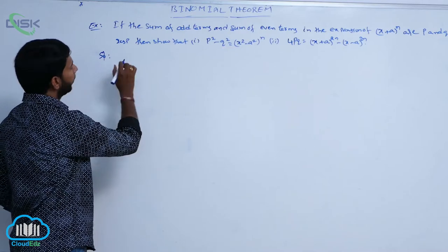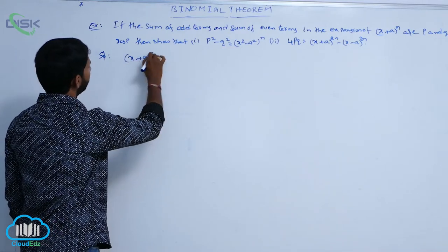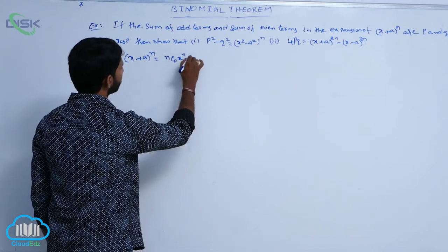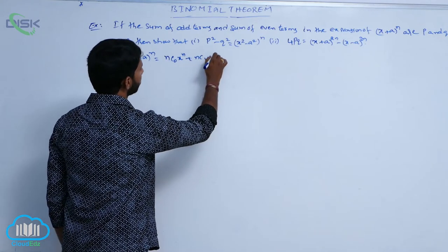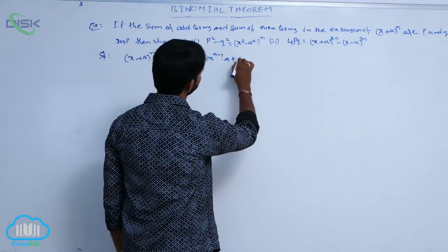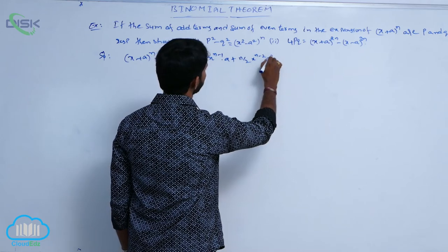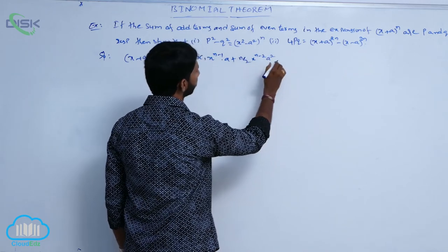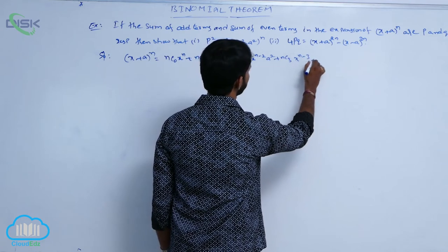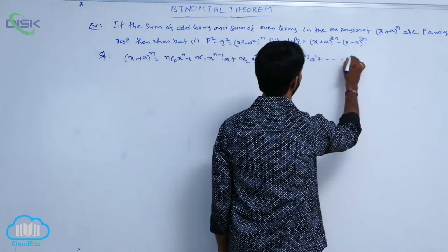First, write the expansion of (x + a) whole power n. That is, (x + a)ⁿ = nC0 · xⁿ + nC1 · x^(n-1) · a + nC2 · x^(n-2) · a² + nC3 · x^(n-3) · a³ + and so on.